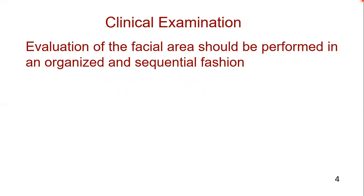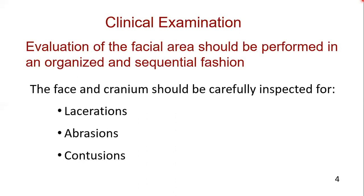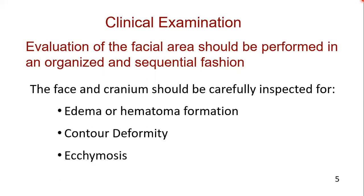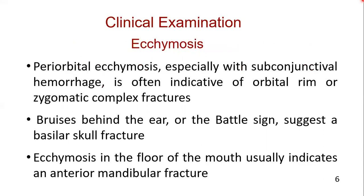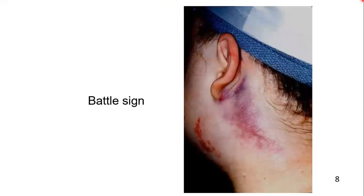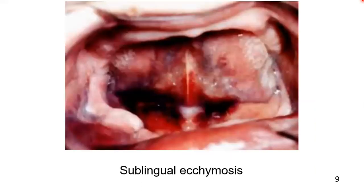Evaluation of the facial area should be performed in sequence. The face and cranium should be carefully inspected for evidence of trauma, including laceration, abrasions, and contusion. Areas of edema, hematoma formation, and possible contour defects should be noted. Areas of ecchymosis should be carefully evaluated. Periorbital ecchymosis, especially with subconjunctival hemorrhage, is often indicative of orbital rim or zygoma complex fractures. Bruises behind the ear, or Battle's sign, suggest a basilar skull fracture. Ecchymosis in the floor of the mouth usually indicates an anterior mandibular fracture.